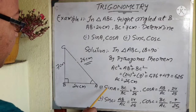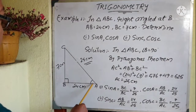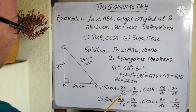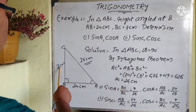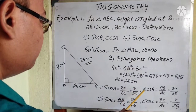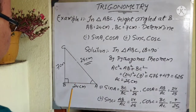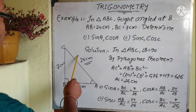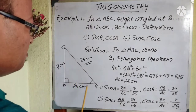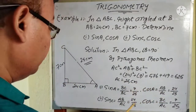Now, sine A: the opposite side to angle A is BC, and the hypotenuse is AC. So sine A equals BC by AC, which is 7 by 25. Cos A is base by hypotenuse: the base from angle A is AB and hypotenuse is AC, so cos A equals AB by AC, which is 24 by 25.